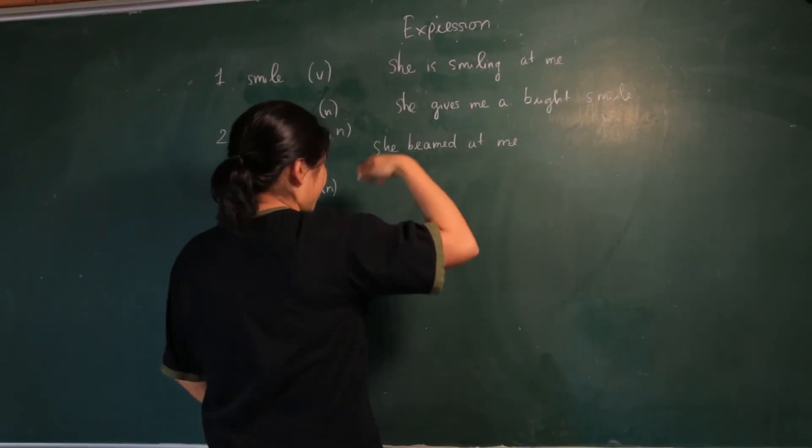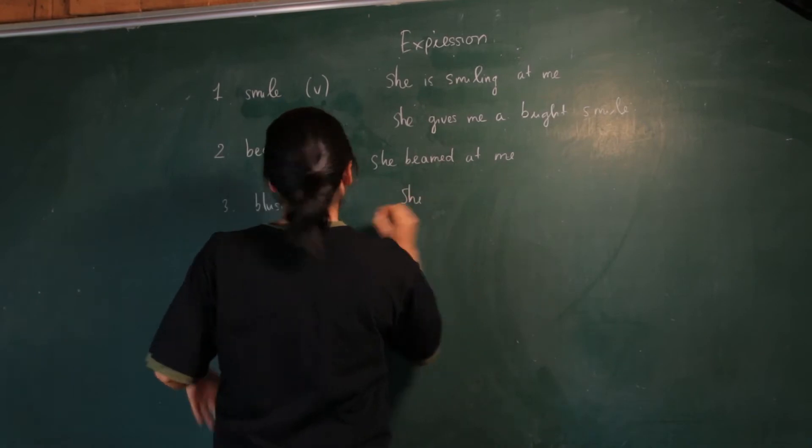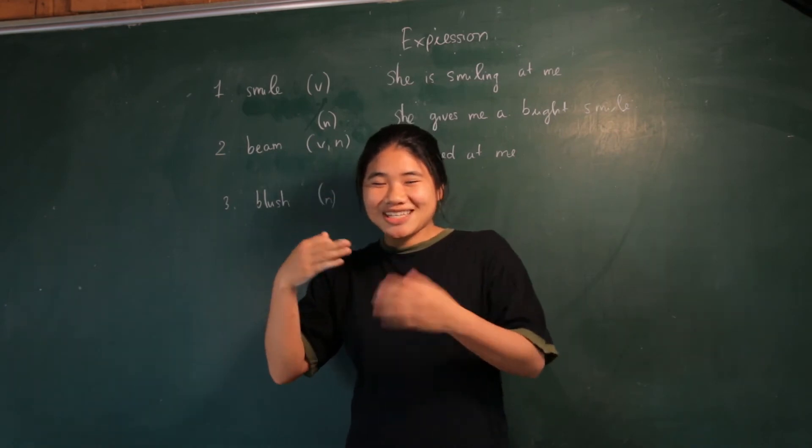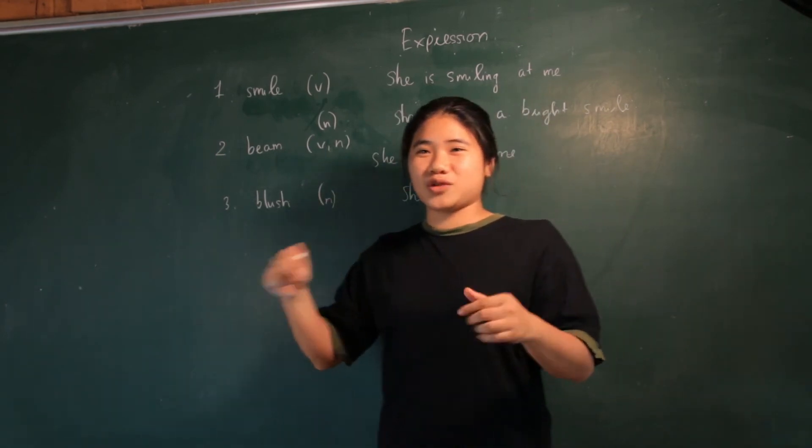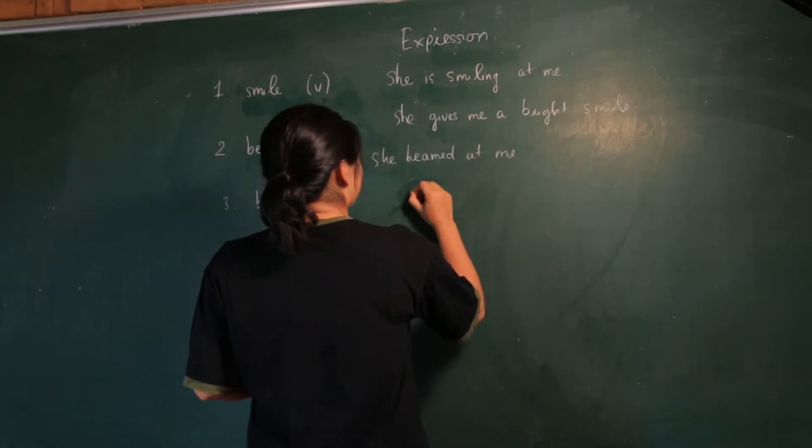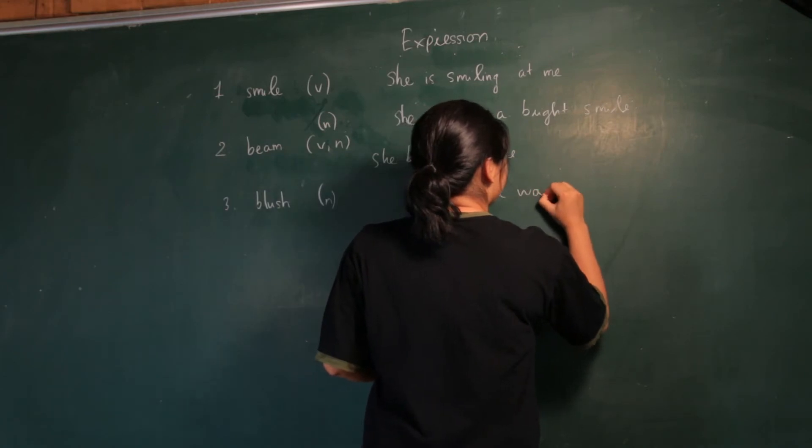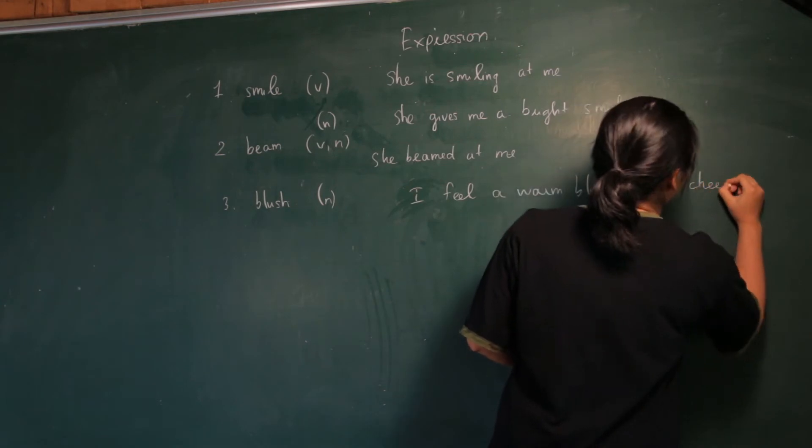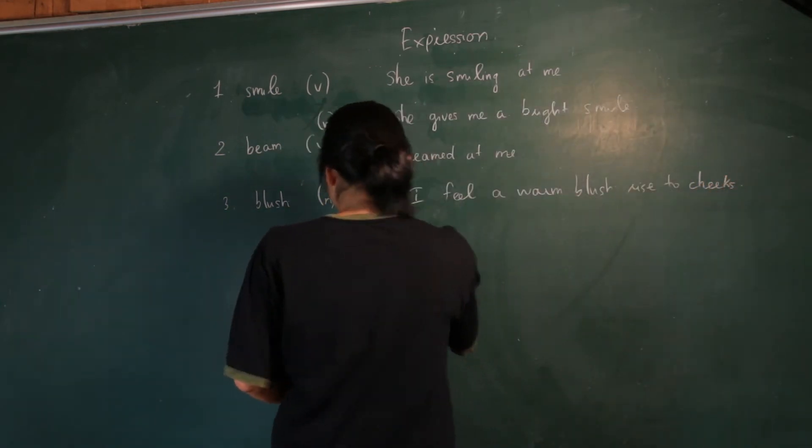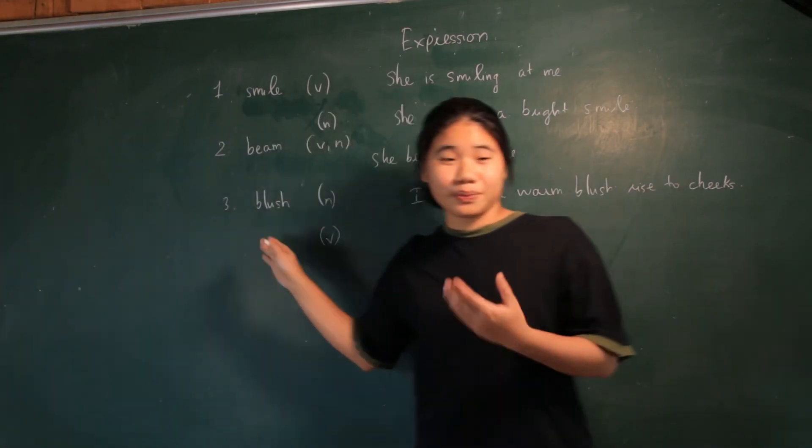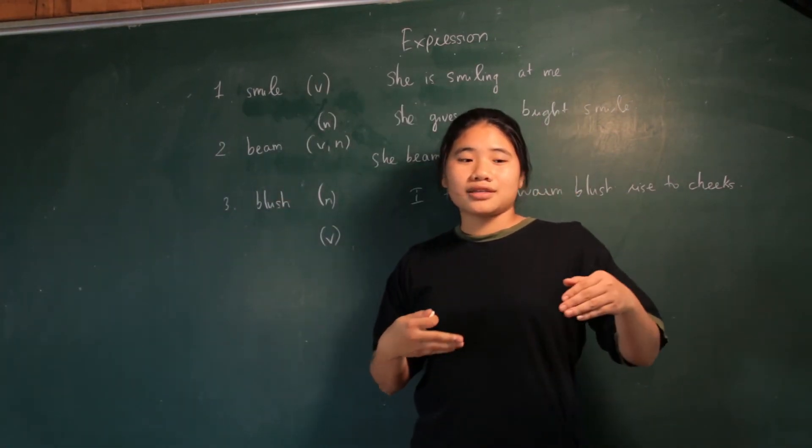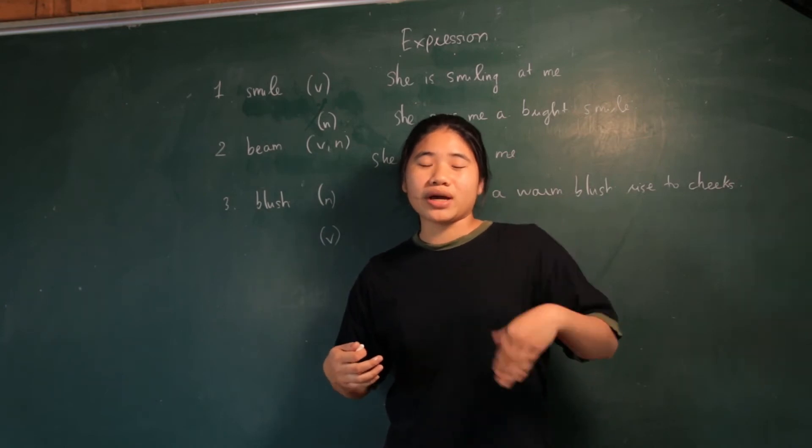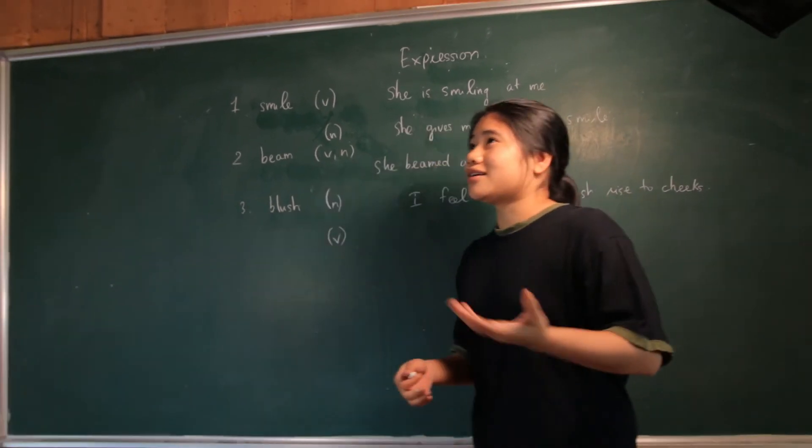An example like, yeah, when I meet this handsome guy, maybe I feel, yeah, and my cheeks have a warm blush. I feel a warm blush rise to my cheeks whenever I meet a handsome guy. Maybe with blush as a verb, it is to become red on your face when you are embarrassed, when you are ashamed.